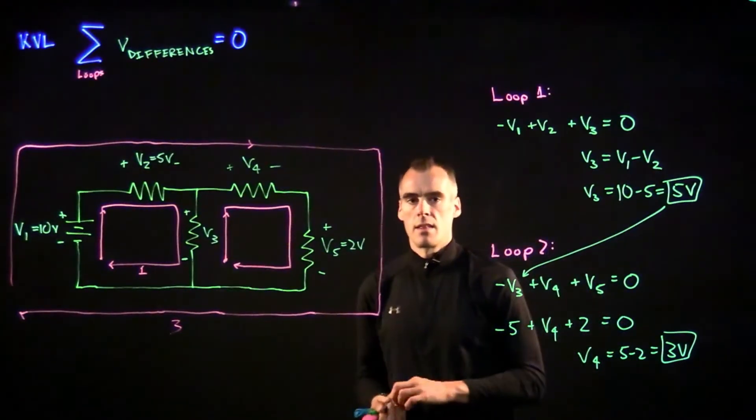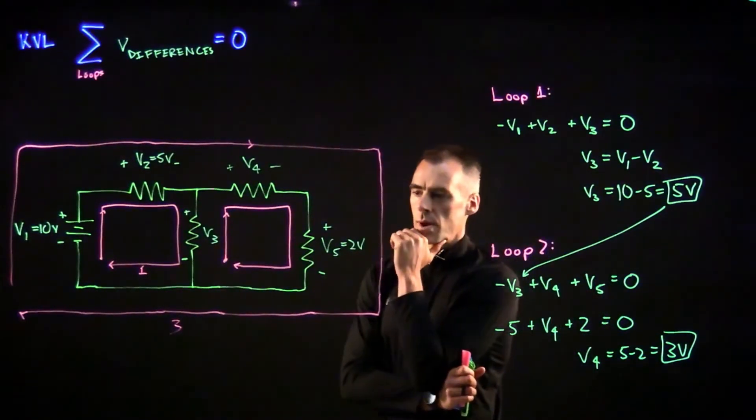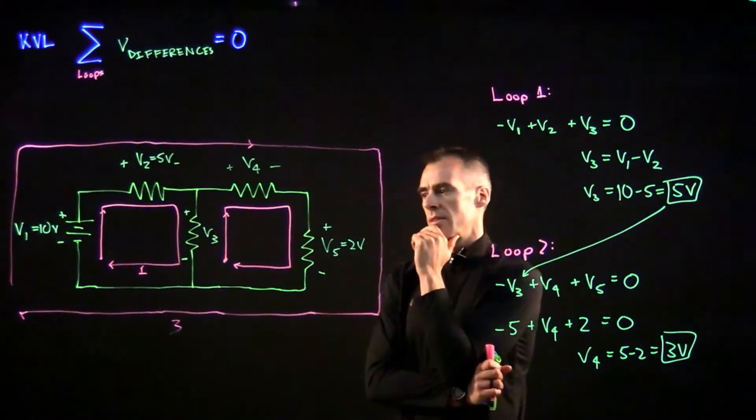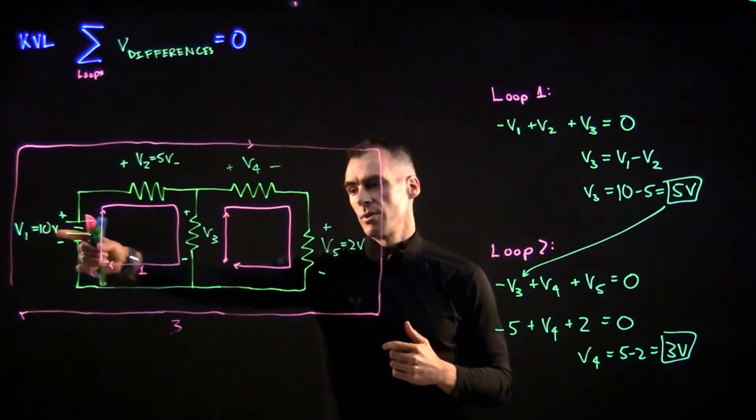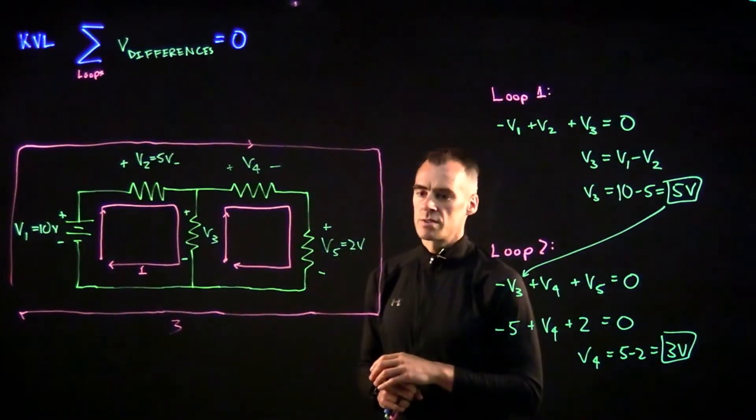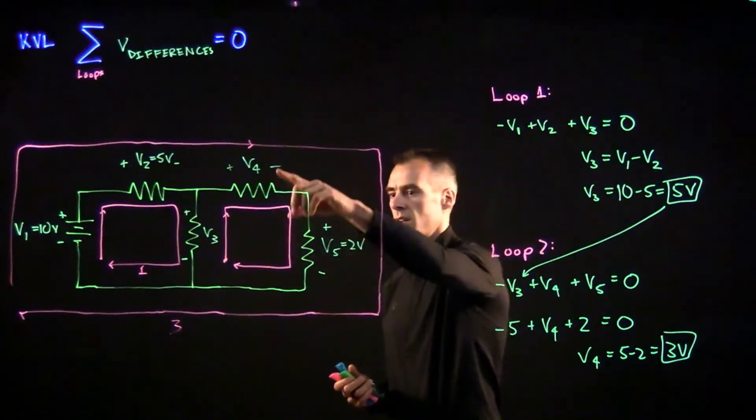We've solved this very simple KVL problem, but note this could have been a little bit more complicated. Say if they didn't give us that source voltage of 10 volts, we could still actually solve for it, because in that case we could just introduce our loop 3.